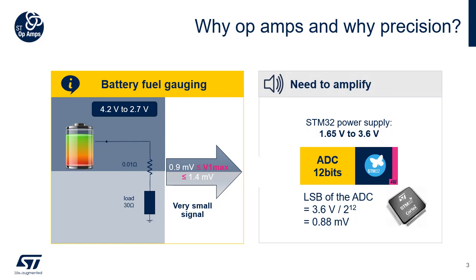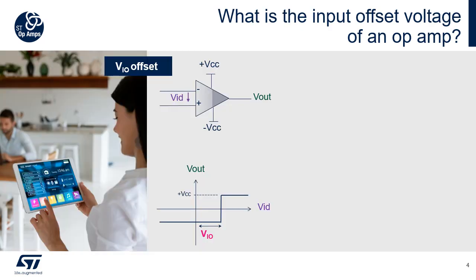We clearly need to amplify the signal to increase the accuracy. The main goal of this video is to identify which OpAmp parameters are the most relevant with regard to precision. The main limitations to precision in analog integrated circuits are noise and mismatch. Before we start, let's define a few terms.